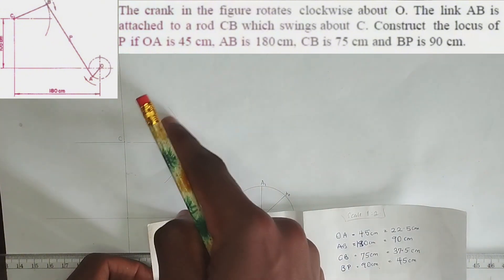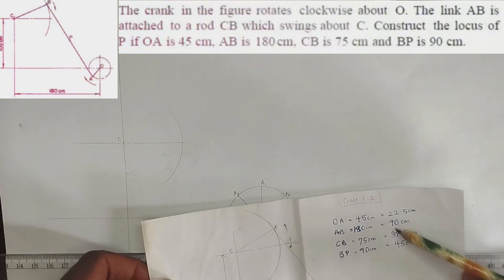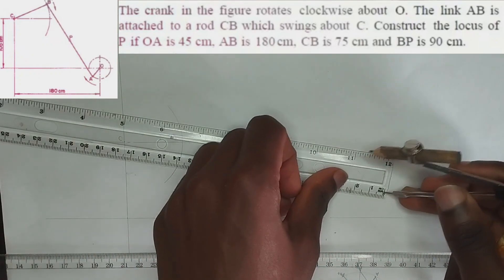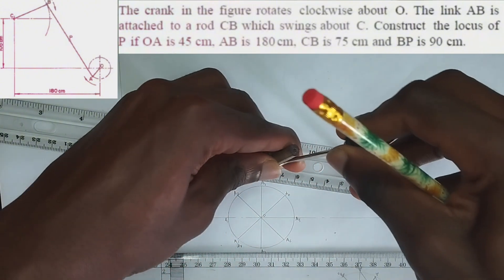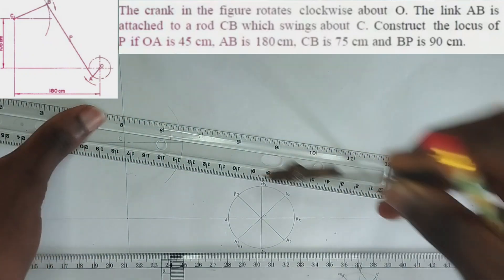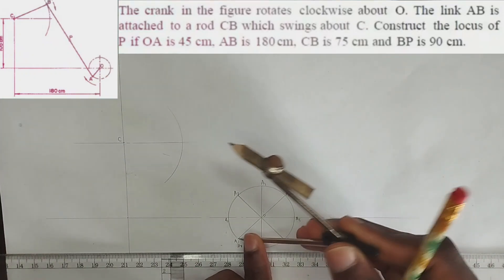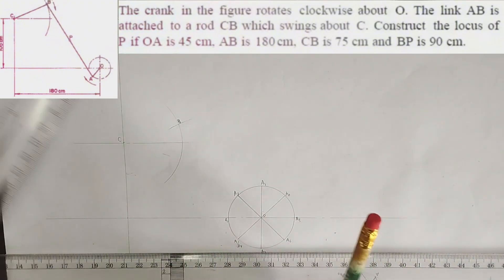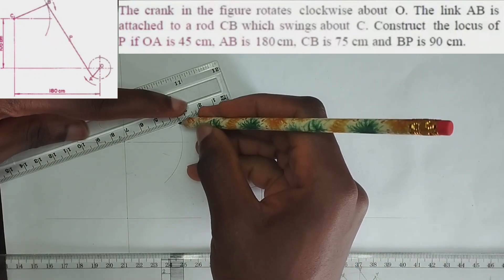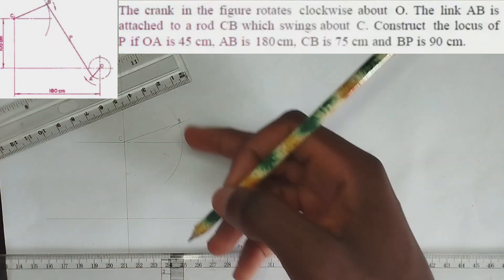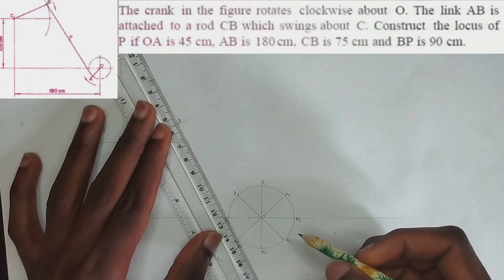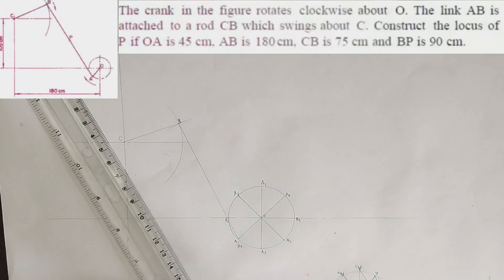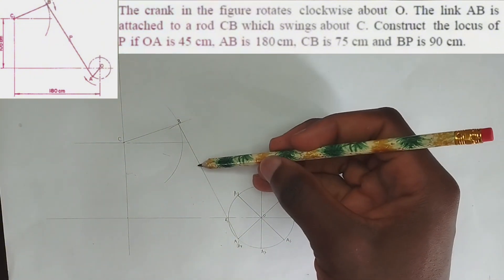Now we need to pick point B. We have been told that AB is 90, so from point A I'm going to pick 90 on my compass. From point A I will strike this point — this is going to be our point B. You can join them together, so we draw a straight line from point B to point A, as seen in the question.